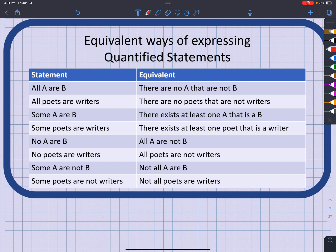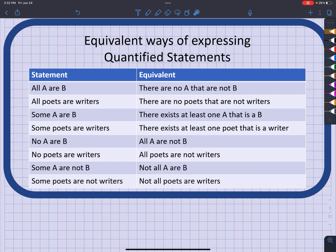Quantified statements are statements that have the words all, some, no, or none. There are equivalent forms: 'all A's are B' can equivalently be stated as 'there are no A's that are not B.' For example, 'all poets are writers' is equivalent to 'there are no poets that are not writers.'